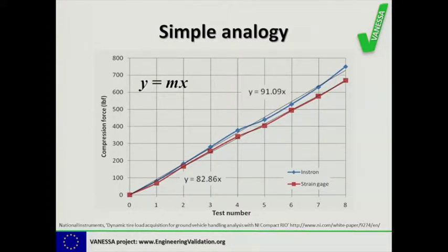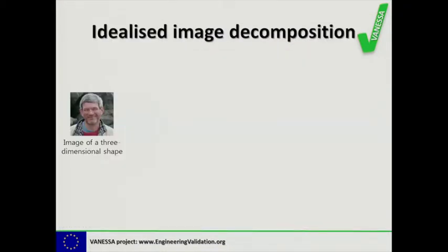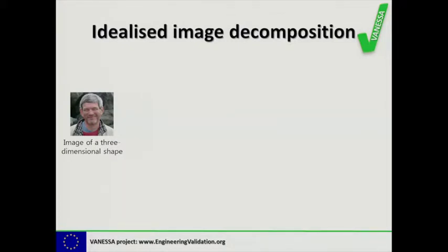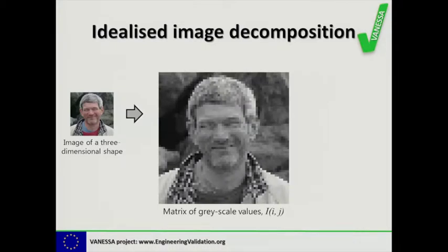So now let's move to something a little bit more complicated. Here's a picture that one of my kids took of me on holiday — this is an image of a three-dimensional shape, i.e. my face. I can turn that into a grayscale image, in which case the intensity of the image is represented as a number which is part of a matrix, and we could designate our matrix as capital I, brackets little i j, with an intensity value at each element in that matrix.